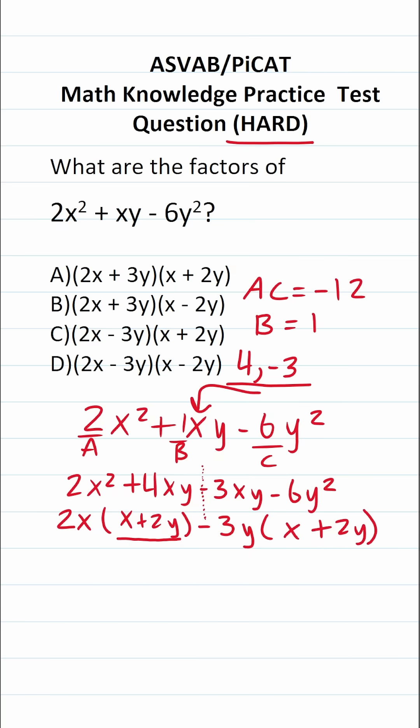All right, so we're almost done. Let's go ahead and finish this factoring. Now that we've factored that out, we're going to combine these into one term. This is going to become 2x minus 3y. And then we're just going to bring down one of these terms that repeats, notably x plus 2y.